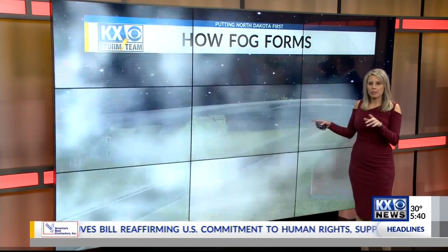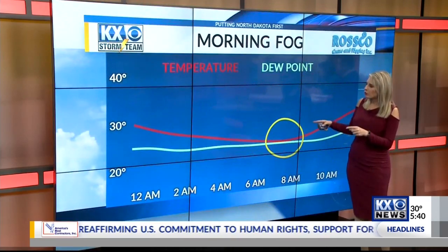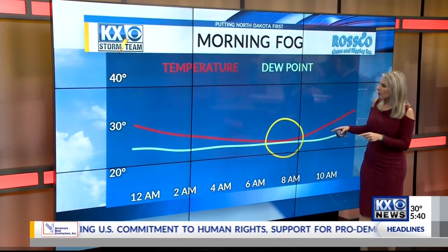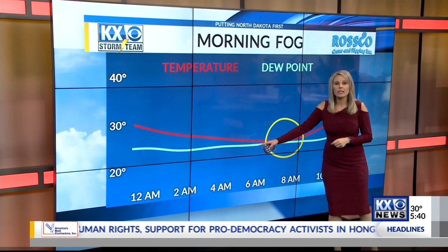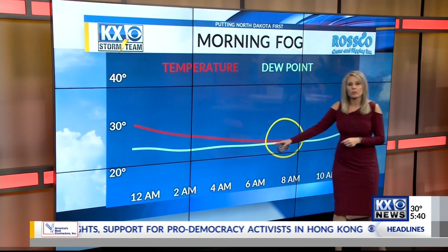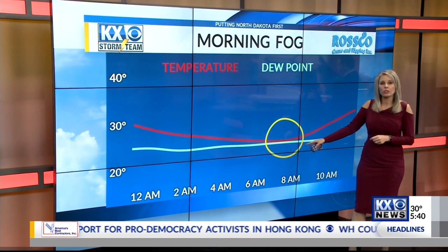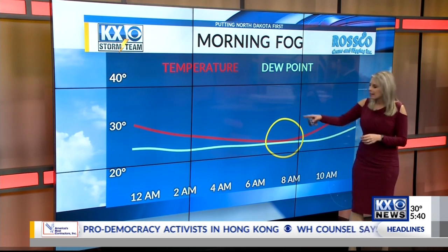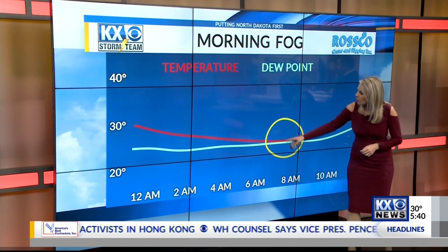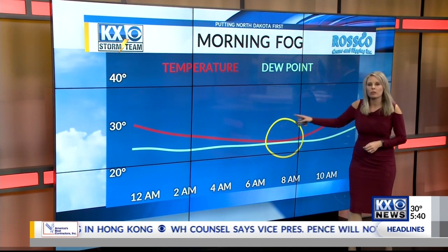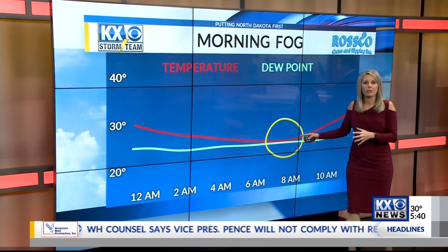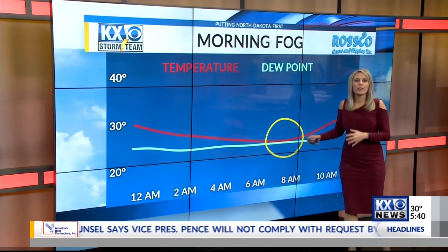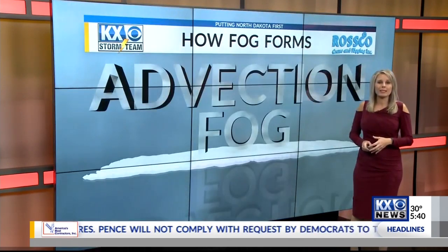Here's a typical temperature profile overnight. You can see the red is the temperature, and the green is dew point that shows the measure of the moisture in the air. As that temperature cools and it meets with the dew point, that is saturation, and that's when fog can form.